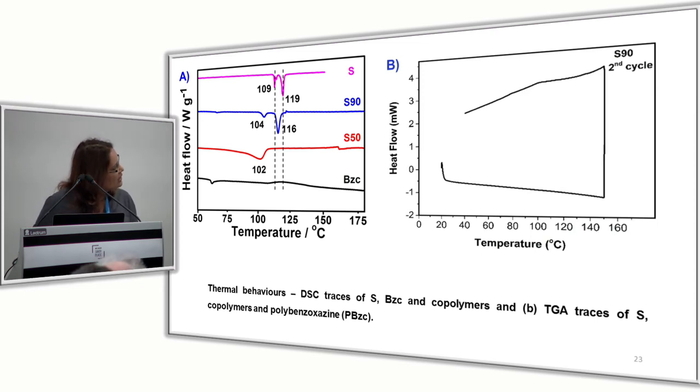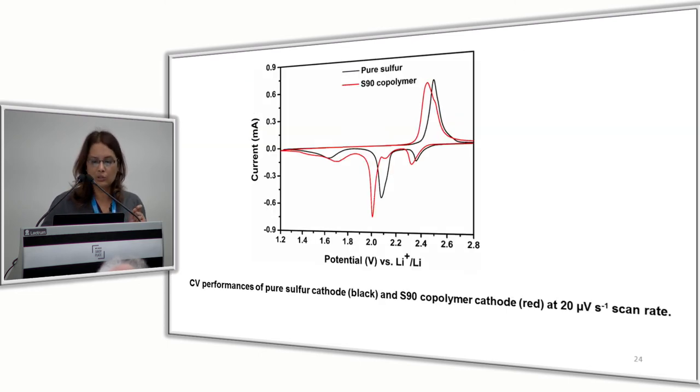We looked at DSC characterization to understand thermal behaviors. Neat sulfur has melting points at 109 and 119 degrees with respect to various phases of sulfur. But S90 is a little bit different. S50, being more amorphous domain, has a broad melting point change. The cardinal monomer doesn't have this melting point. If you look at DSC rerun on the second cycle, we don't see melting transitions at 104 and 116 degrees centigrade, signifying the polymer has sulfur chemically linked to the matrix.